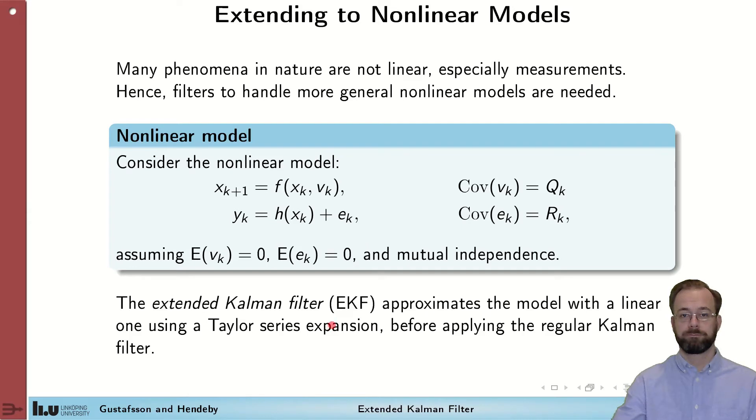To models of this kind here. They are similar to the one we have solved, but instead of a linear combination of x, the next state is actually a general function of x and the process noise. The measurement, in the same way, is not a linear combination of the state, but a general function of the state. We still assume that we know the covariance of both process noise and measurement noise, and that the mean of both the process noise and measurement noise are zero. In the extended Kalman filter, we will approximate this model with a linear one, using the Taylor series expansion, and then apply the Kalman filter to get new filter equations.